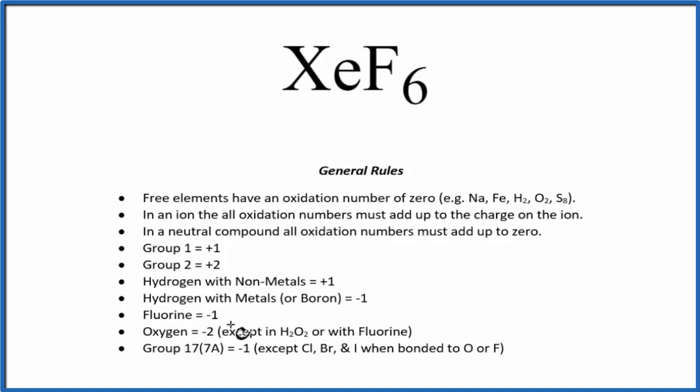When we look down the list, we don't see xenon here, but we do see that fluorine is almost always minus one. So we know that each fluorine is going to have an oxidation number of minus one.